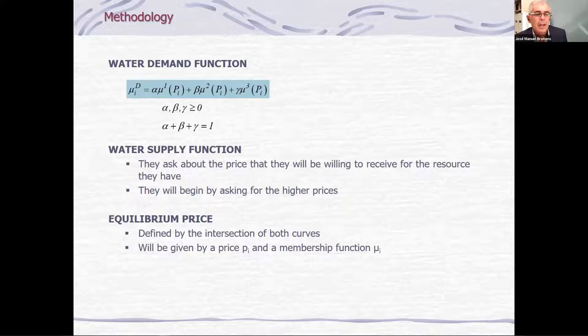The water supply function will be constructed in a similar way. But here we will begin by asking for the higher prices. And we ask about the price that they will be willing to receive for the resource they have. In this case, we ask to inhabitants of the high basin. In the previous case, we asked to the farmers on the middle and the lower basin. And here, finally, we have the equilibrium price.